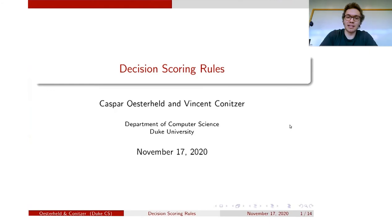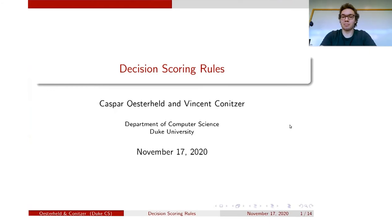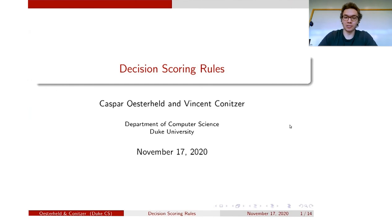Hi, my name is Kaspar Osterhild, and I'm here presenting joint work with my PhD advisor, Vince Kornitzer, on decision scoring rules.